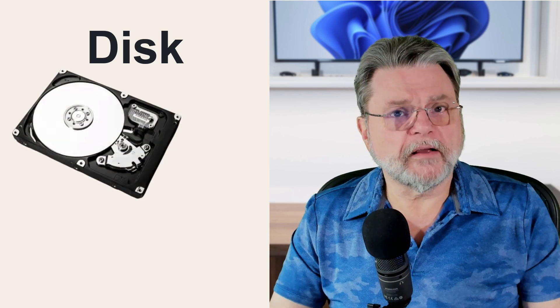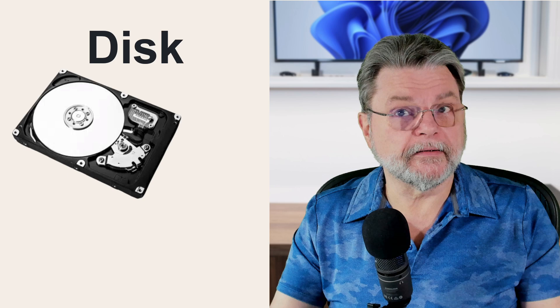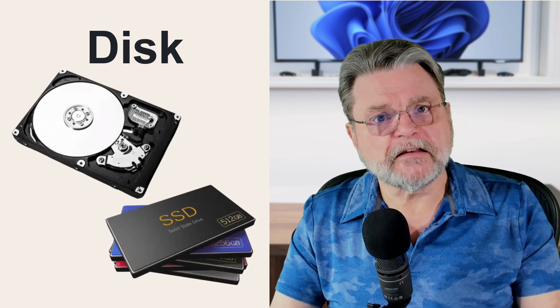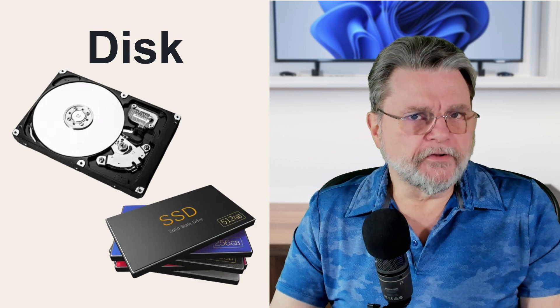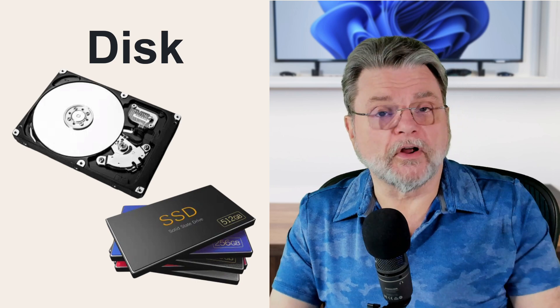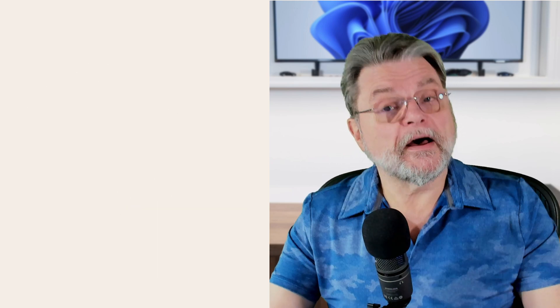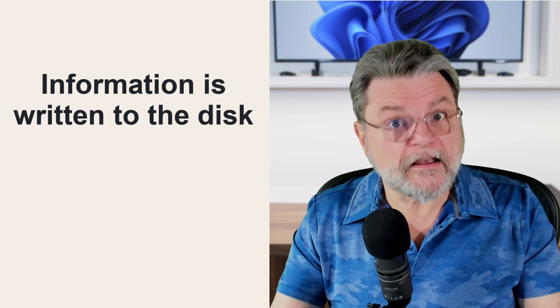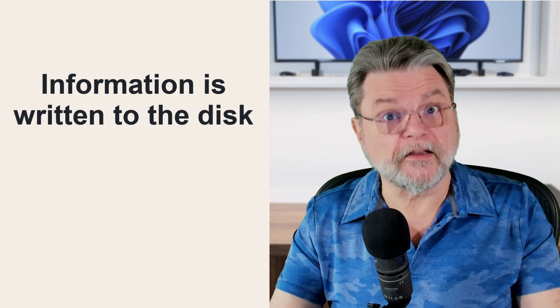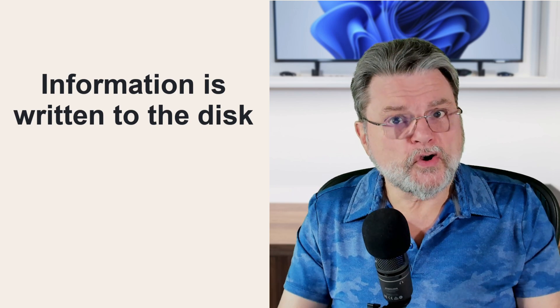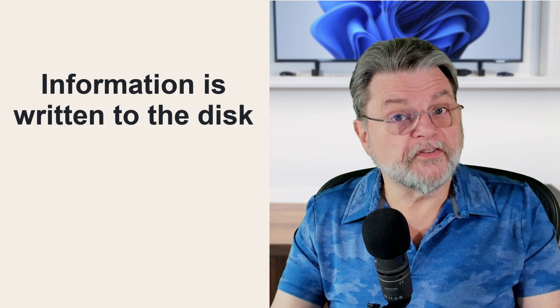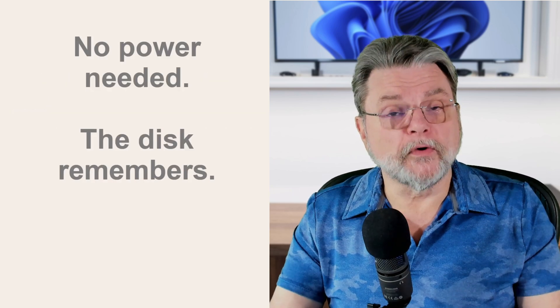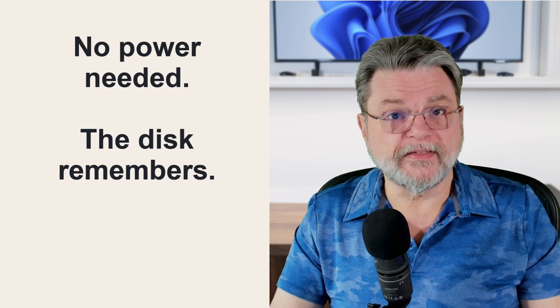Now let's talk about disk. For this discussion, I'm actually talking about both hard disks — spinning metal platter hard disks — and solid state drives. SSDs are typically used now in place of or in addition to more traditional hard drives because they're smaller, faster, and use less power. The important thing about both of them is that information is written to them, saved to them. So when you do a file save of a document, you are saving it to disk. The characteristic that differentiates disk is that when you remove the power, the disk remembers everything anyway.